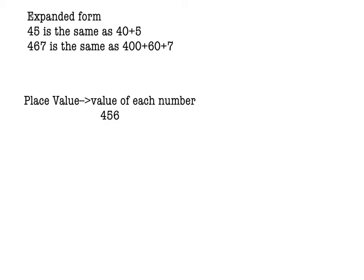And then also the place value, the value of each number is the same thing I said. 450, and that's 6. So the 4 represents 400, the 5 represents 50, and the 6 represents the 6, the place value. So you'll need to know that in order to multiply here.